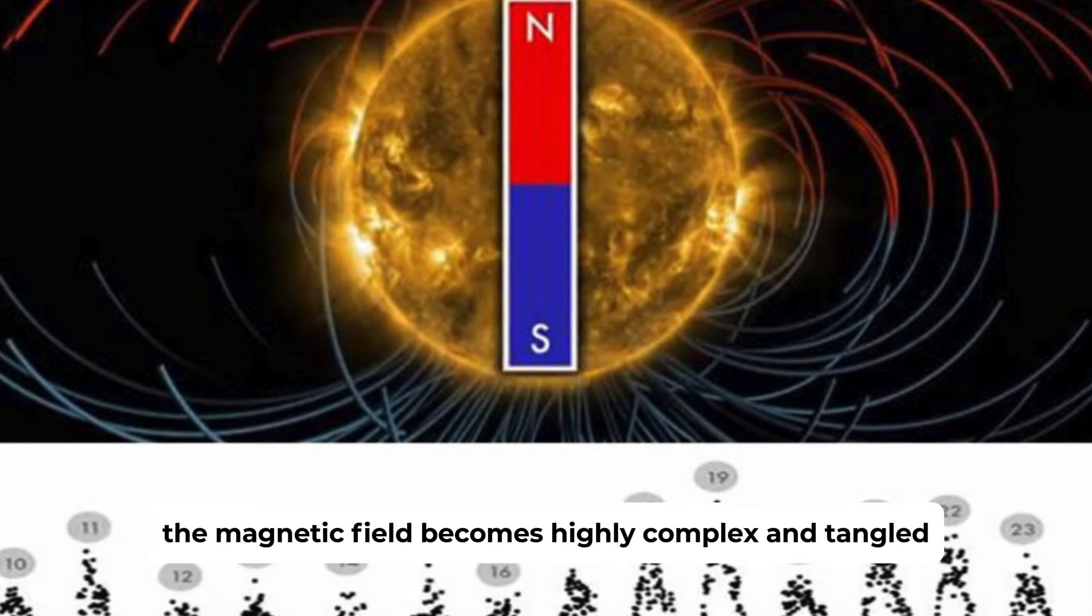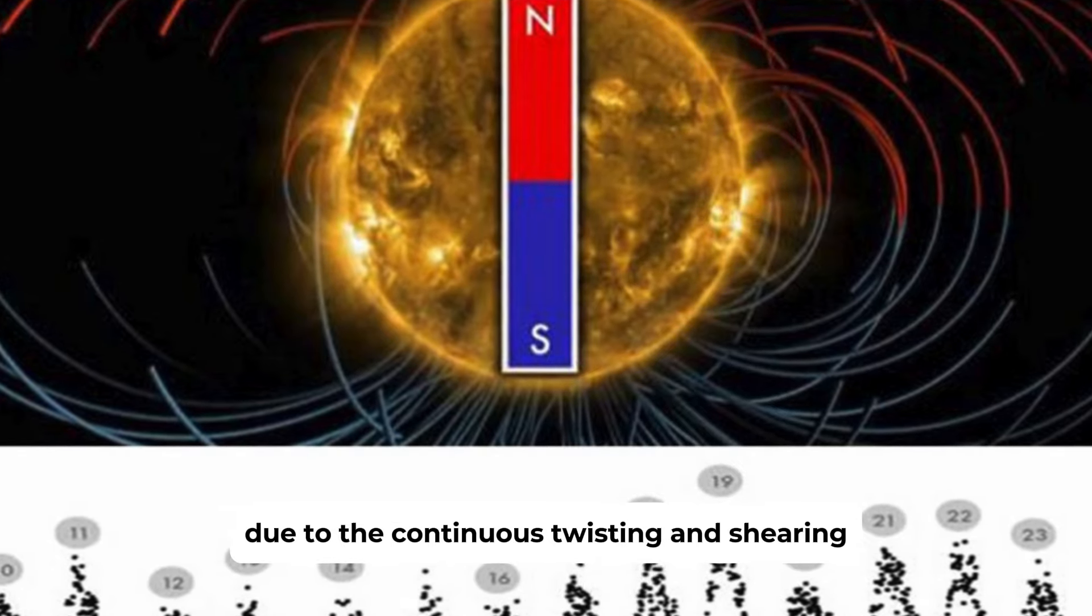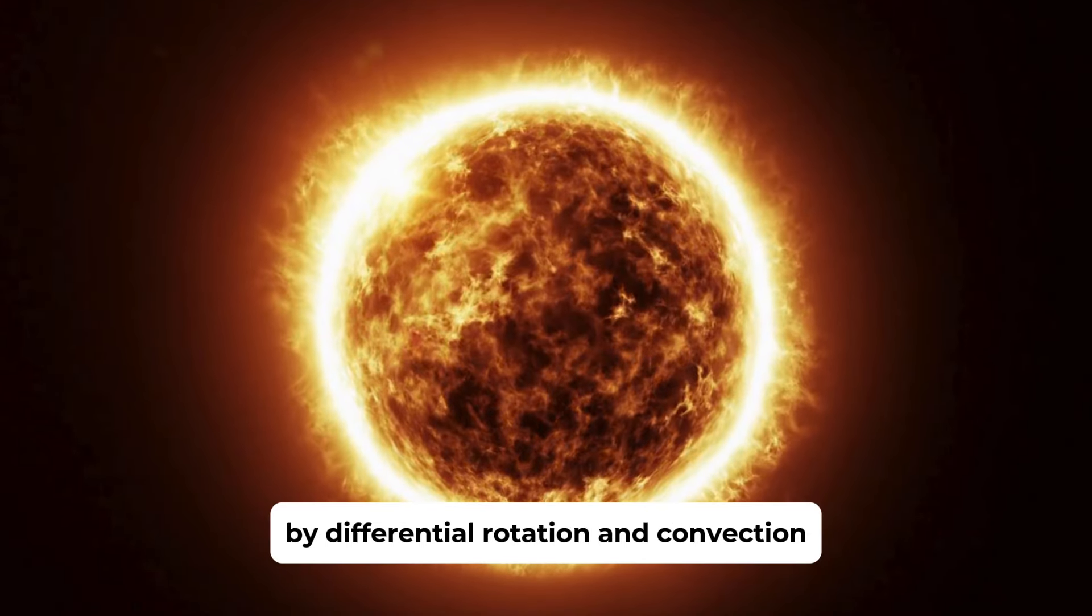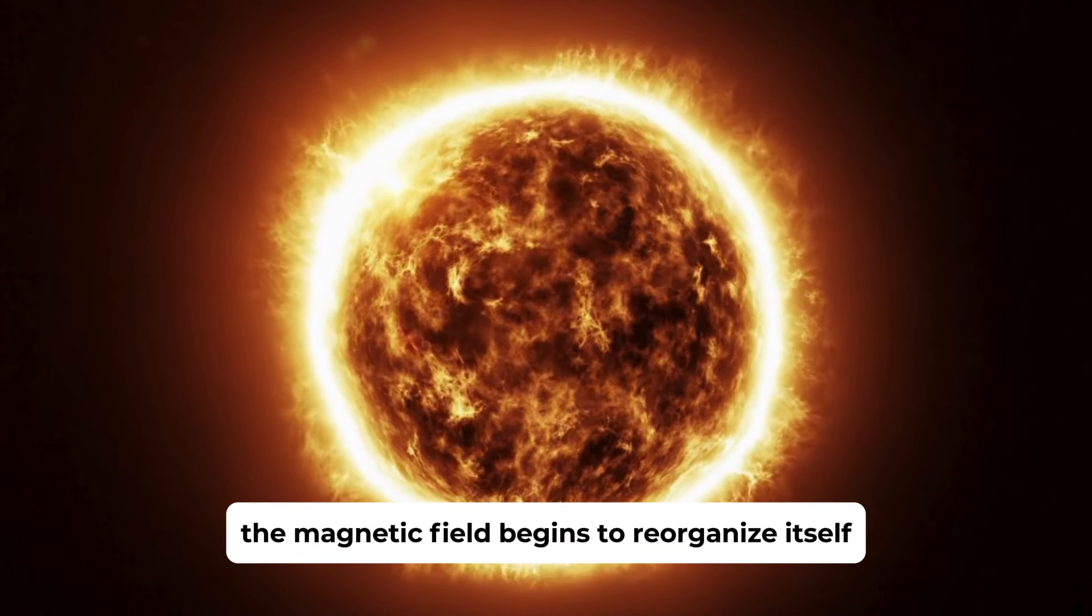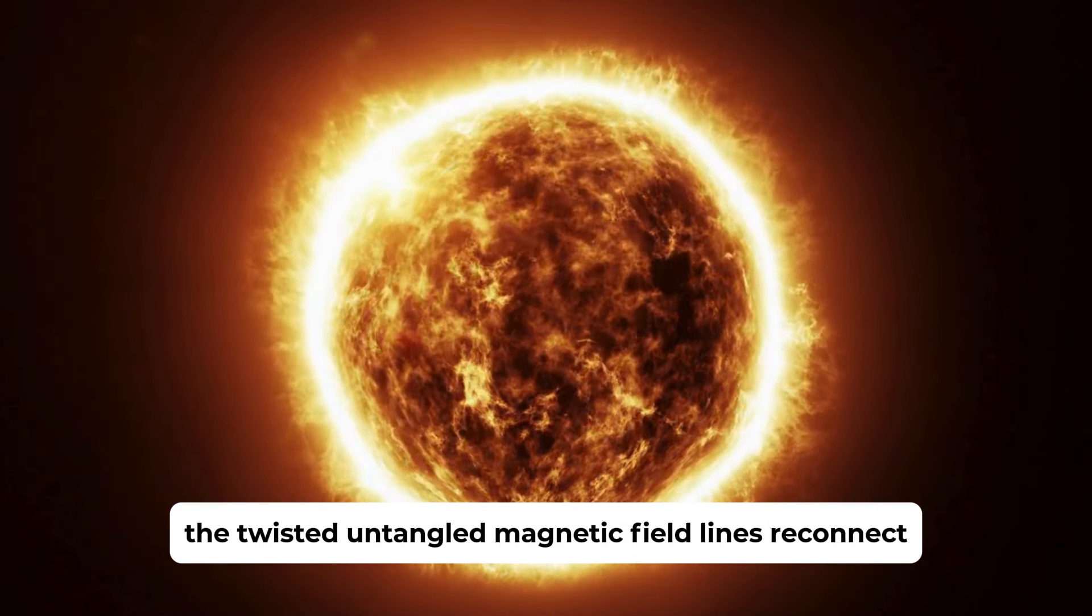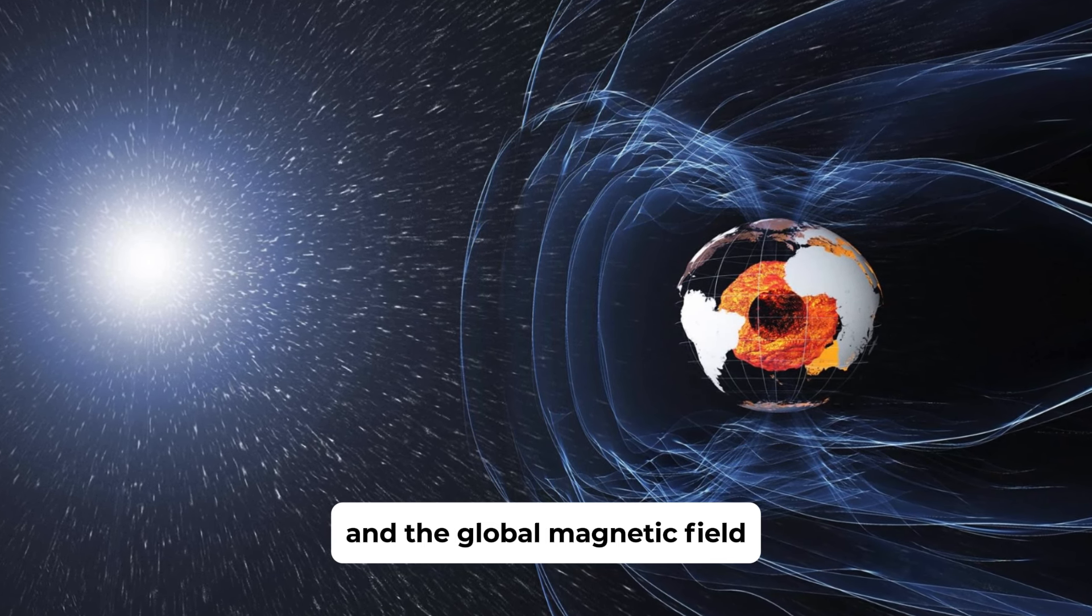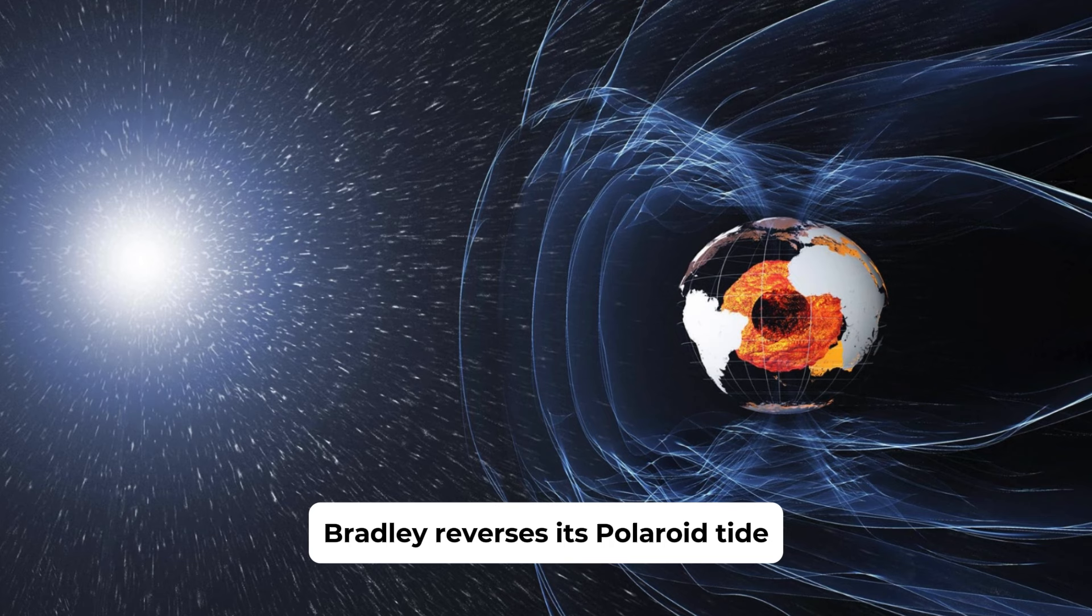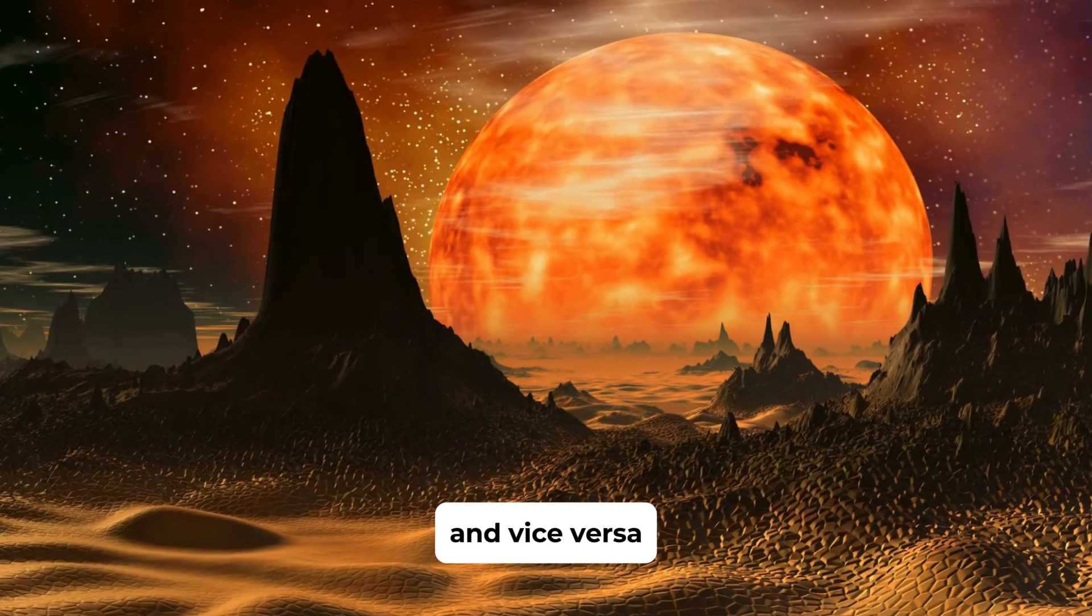The magnetic field becomes highly complex and tangled due to the continuous twisting and shearing by differential rotation and convection. As solar maximum wanes, the magnetic field begins to reorganize itself. The twisted and tangled magnetic field lines reconnect and the global magnetic field gradually reverses its polarity. The north magnetic pole becomes the south magnetic pole, and vice versa.